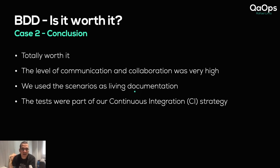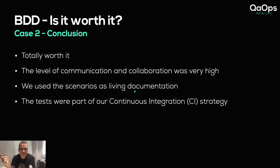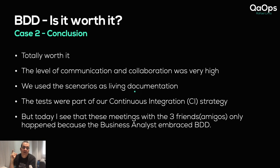Those scenarios were used as actual live documentation — the business was involved, everybody was involved. The tests were part of our continuous integration strategy using Jenkins. Jenkins always has a link for the last build report, and that link stays the same. So whenever someone — a PM, a leader, or a boss — asked for testing proof, that link would always show which scenarios ran in the last successful build. It was always up to date without maintaining extra documentation.